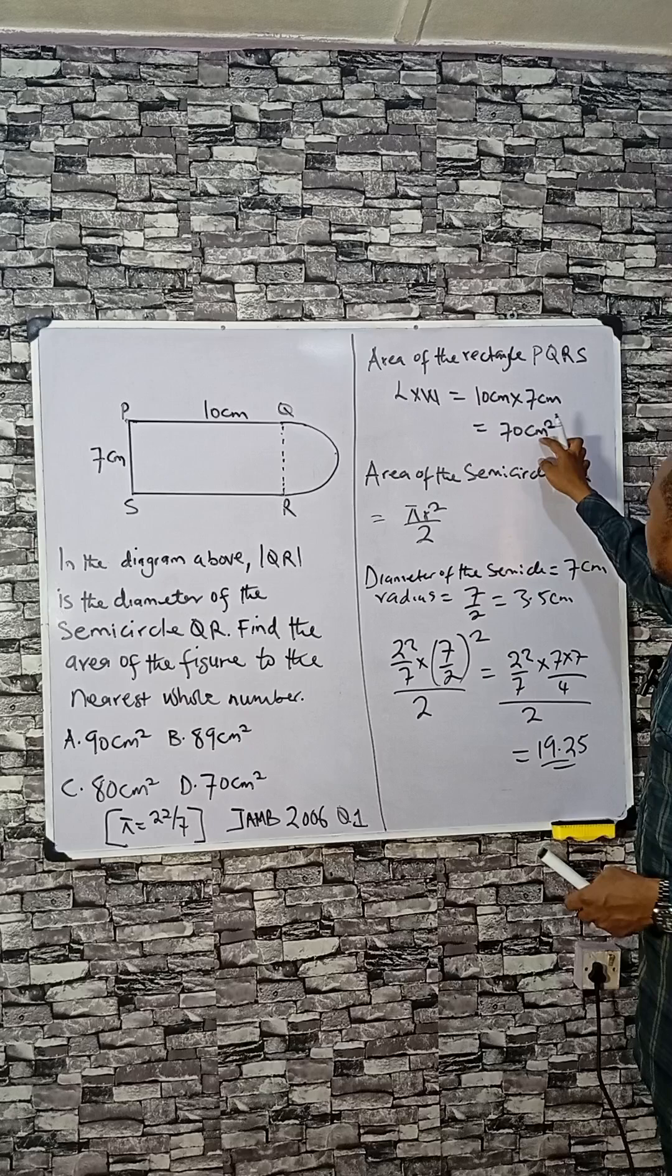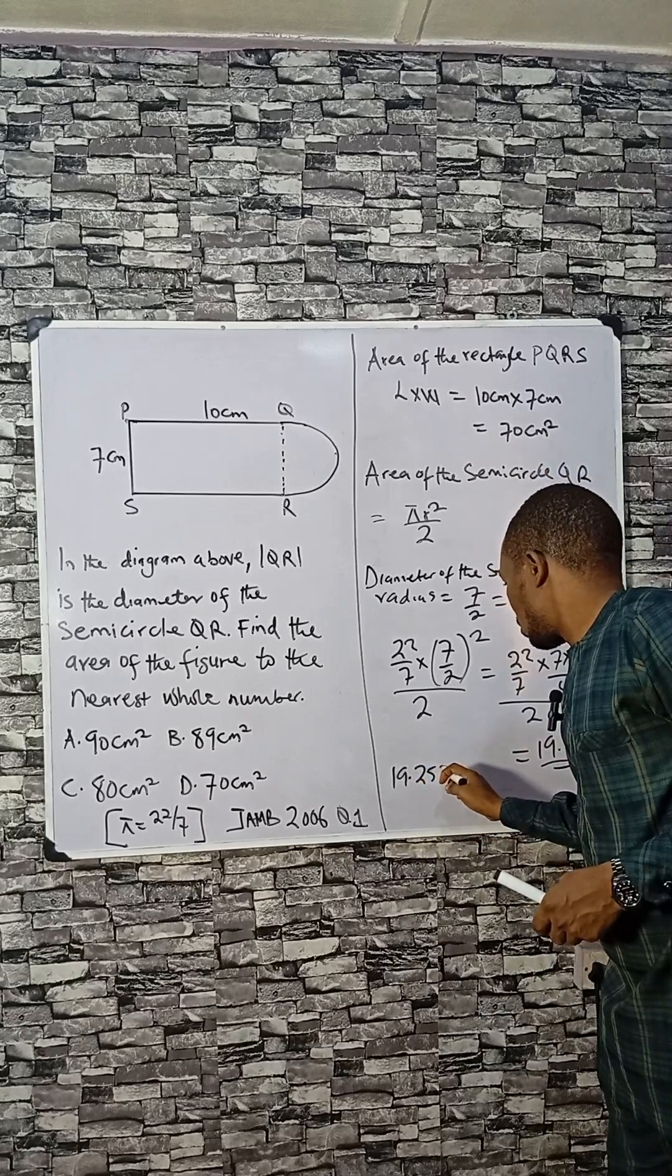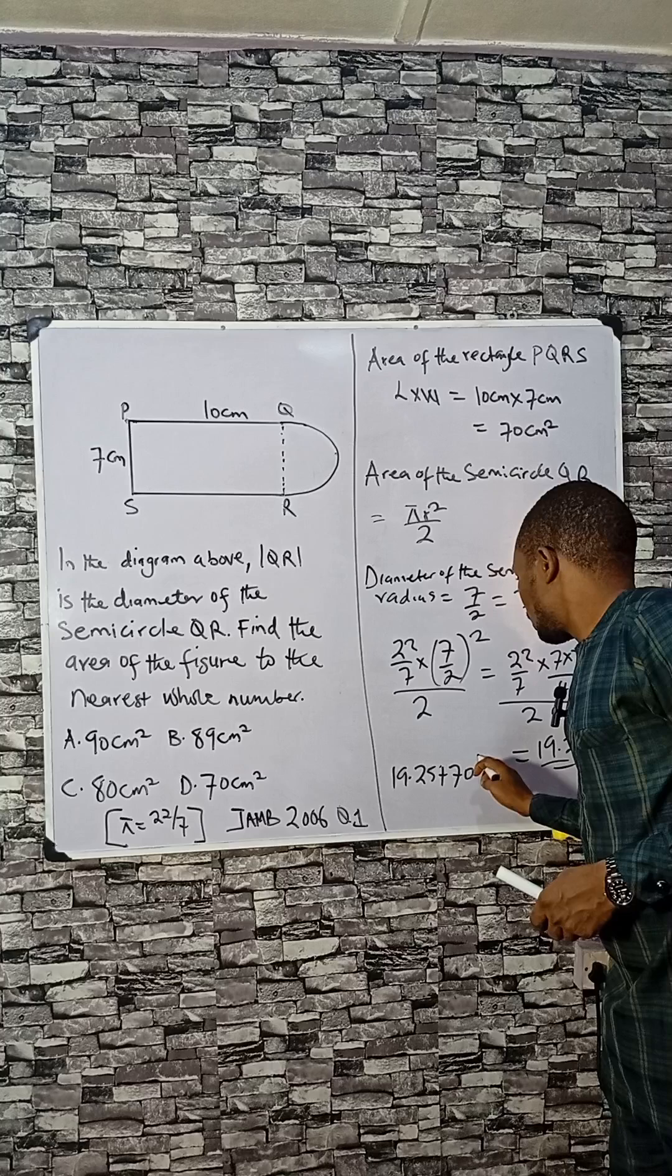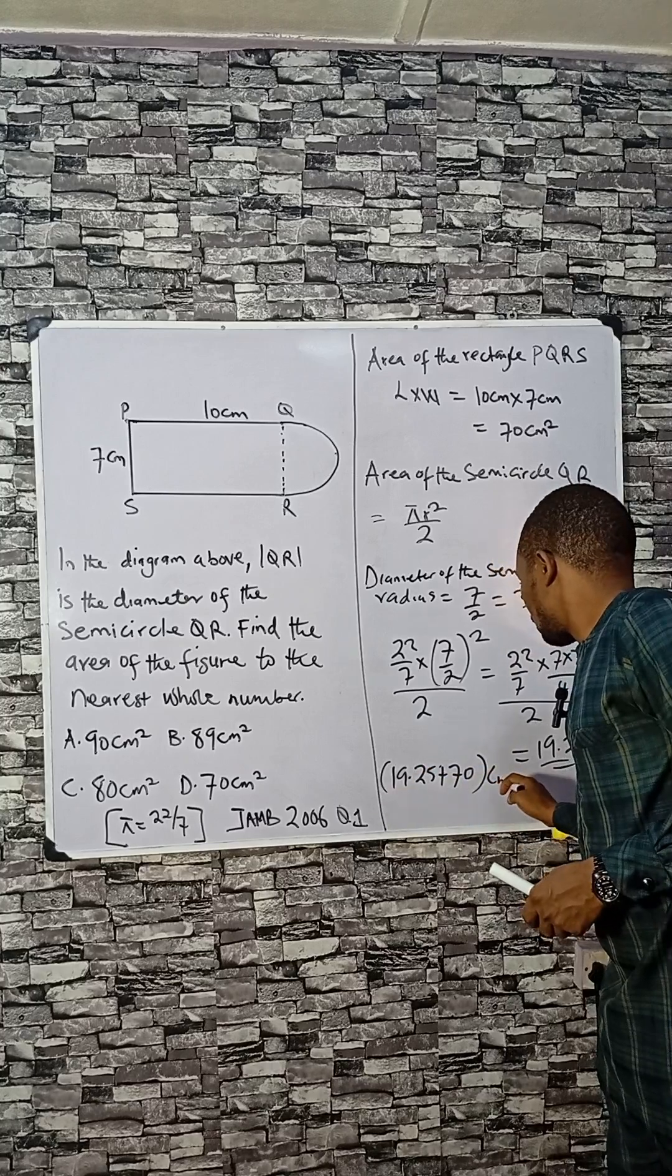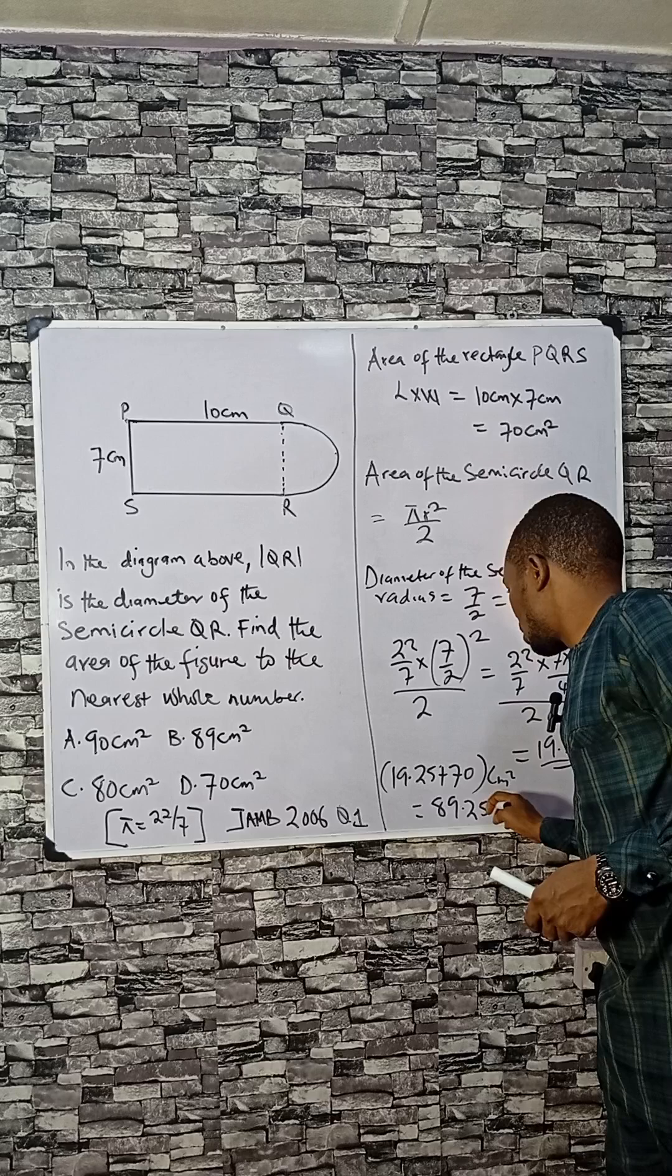So 19.25 plus 70, all in cm squared, gives us 89.25 cm squared.